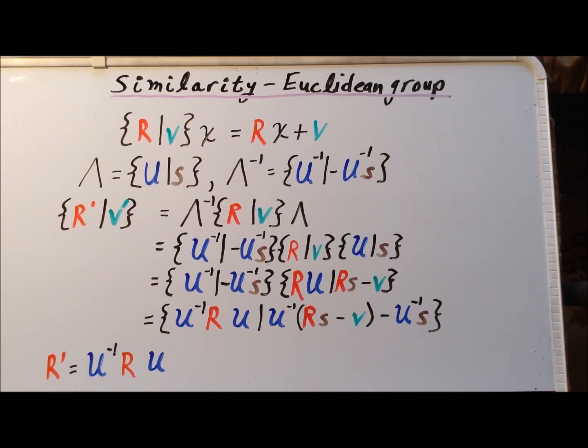So now to find the result of the similarity transformation, we set the parts of the Seitz expression equal to each other. So the part, the rotational part, R prime, is equal to the part to the left of the vertical line here. That tells us that R prime is equal to U to the minus 1 R times U, which is exactly the result we would expect if we were simply dealing with 3 by 3 matrices without any shifts of the coordinate system.